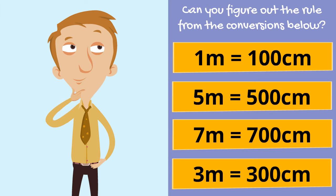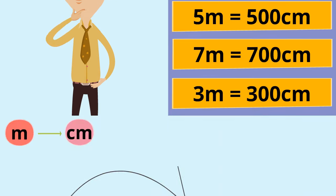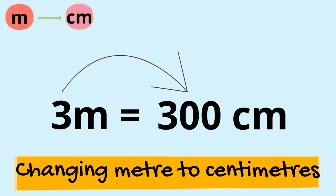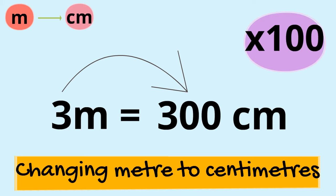Well if you have a very sharp eye you might have noticed that to convert meters to centimeters we need to multiply by 100. That is because of that really important relationship fact we learned before. 100 centimeters is equal to 1 meter. So that's our rule: multiply by 100.